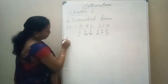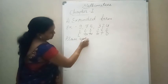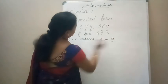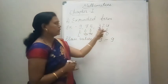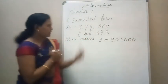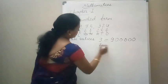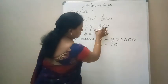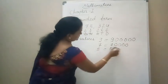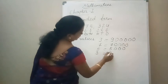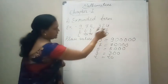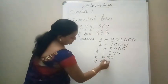The place values of each digit are: 9 is at lakhs — count the digits after 9: there are 5 digits, so the place value of 9 is 9,00,000. The place value of 7 is 70,000. The place value of 5 is 5,000. The place value of 3 is 300. The place value of 2 is 20. And the place value of 4 is 4.